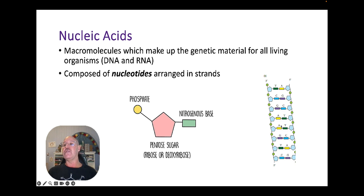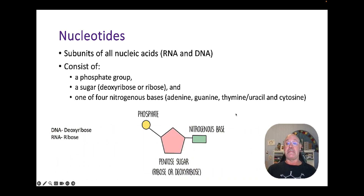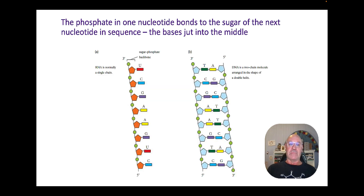You can see there are different types of nitrogenous bases: T, C, G, and A — thymine, cytosine, guanine, and adenine. In RNA, thymine is replaced by uracil. So the four bases in DNA are adenine, guanine, thymine, and cytosine, while RNA has adenine, guanine, cytosine, and uracil.